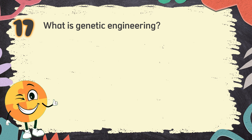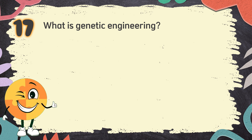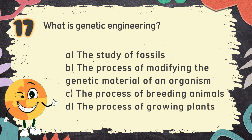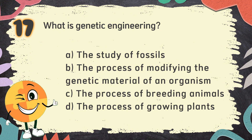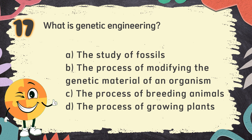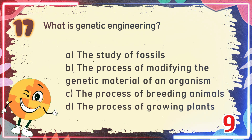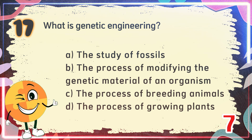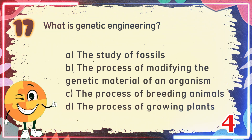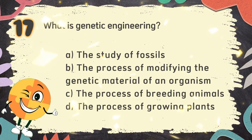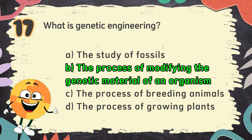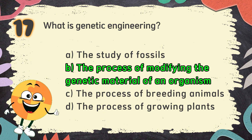Number 17. What is genetic engineering? The choices are A. The study of fossils, B. The process of modifying the genetic material of an organism, C. The process of breeding animals, D. The process of growing plants. The correct answer is B. The process of modifying the genetic material of an organism.